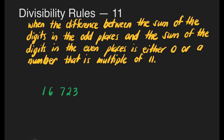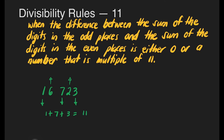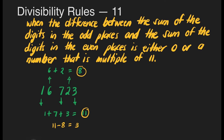We now have 16,723. This number is in odd place, this one is in even, this is in odd, this is in even place, and this is in odd. All we need to do is to add all the numbers in the odd places. That's 1 plus 7 plus 3. 7 plus 1 is equal to 8, plus 3 is equal to 11. And this one is 6 plus 2, that's 8. So we will subtract these two numbers. That's 11 minus 8 is equal to 3, making this number not divisible by 11. Because it has to have a difference of 0 or a multiple of 11, and 3 is not a multiple of 11. Which means 16,723 is not divisible by 11.